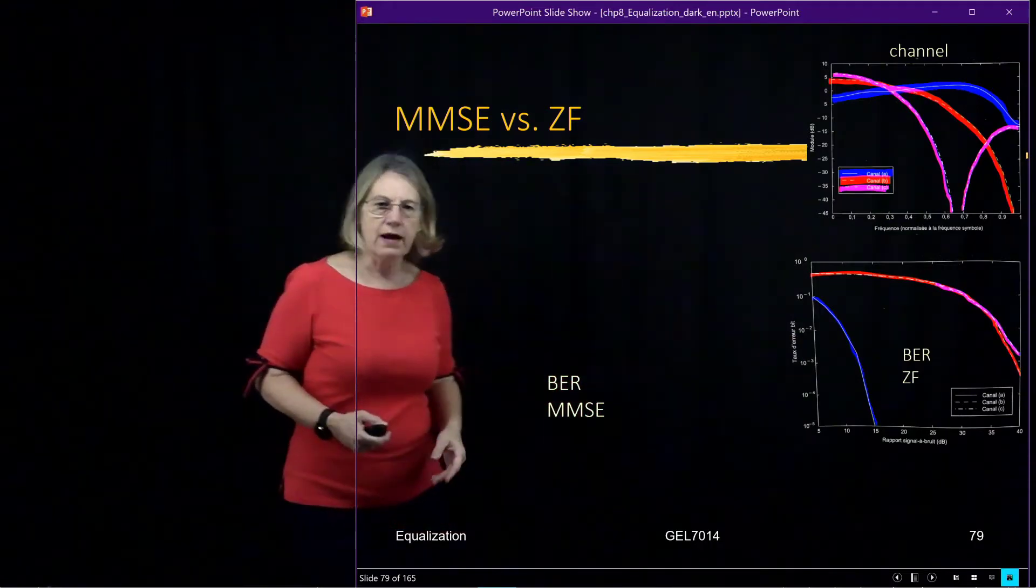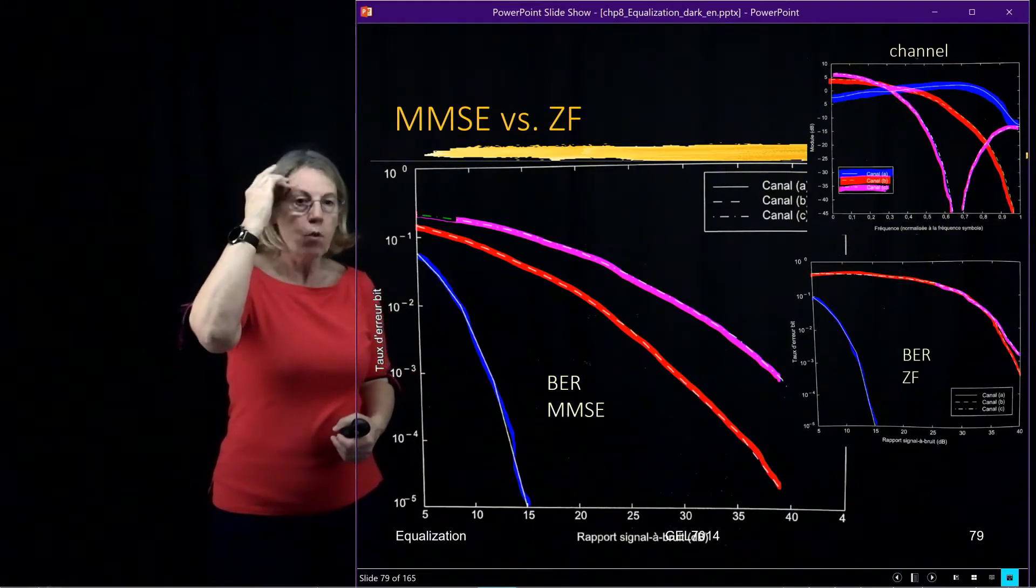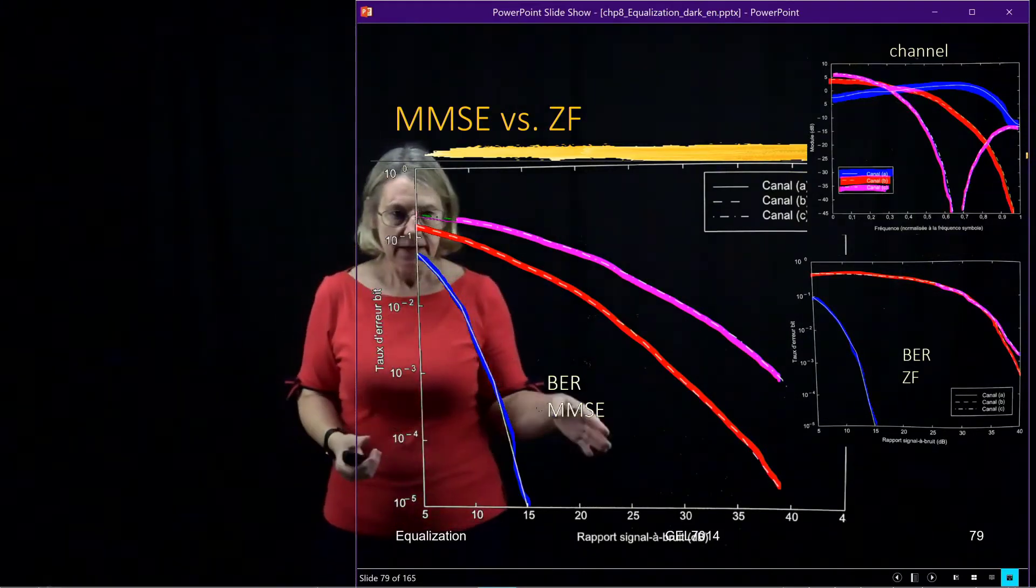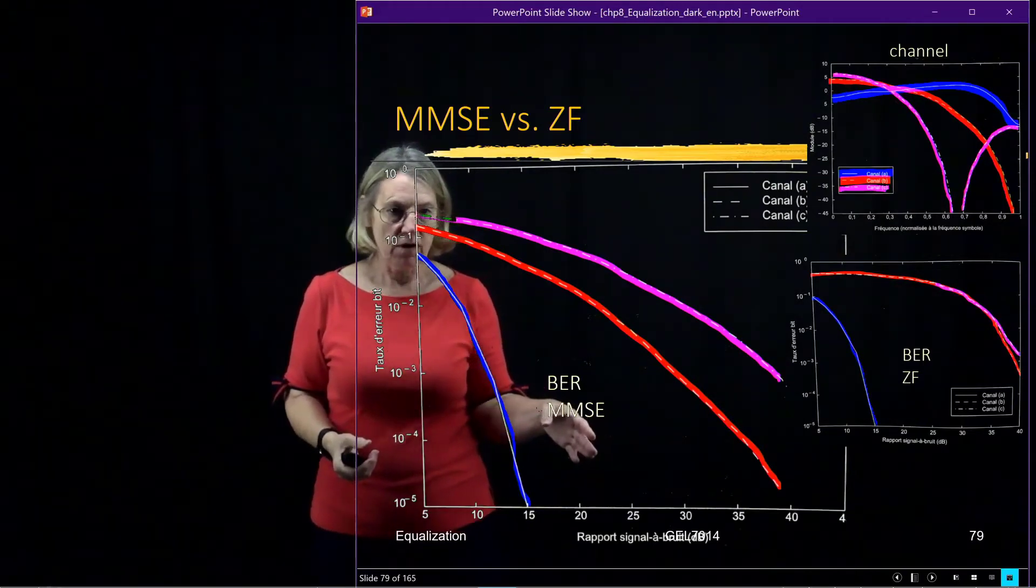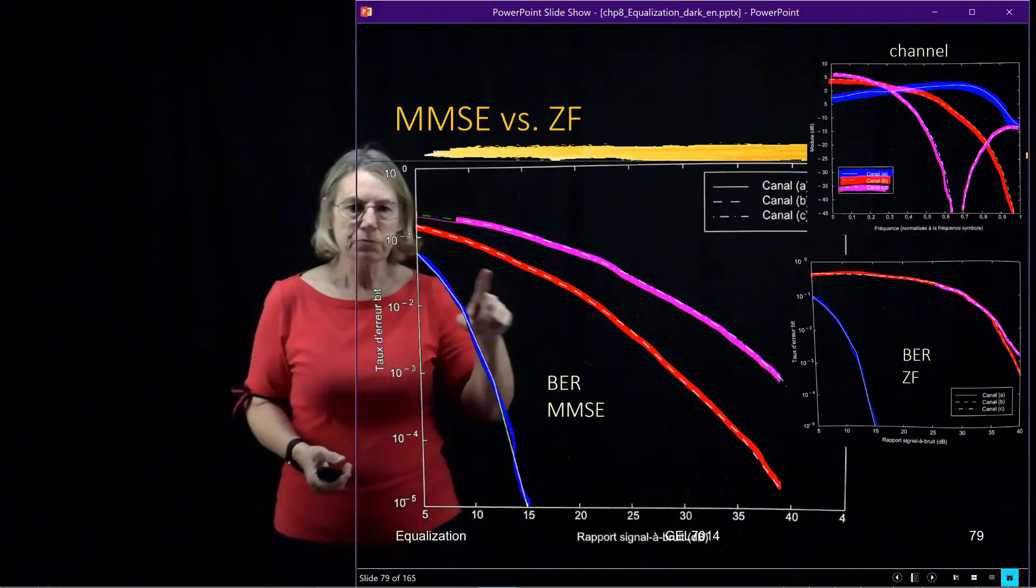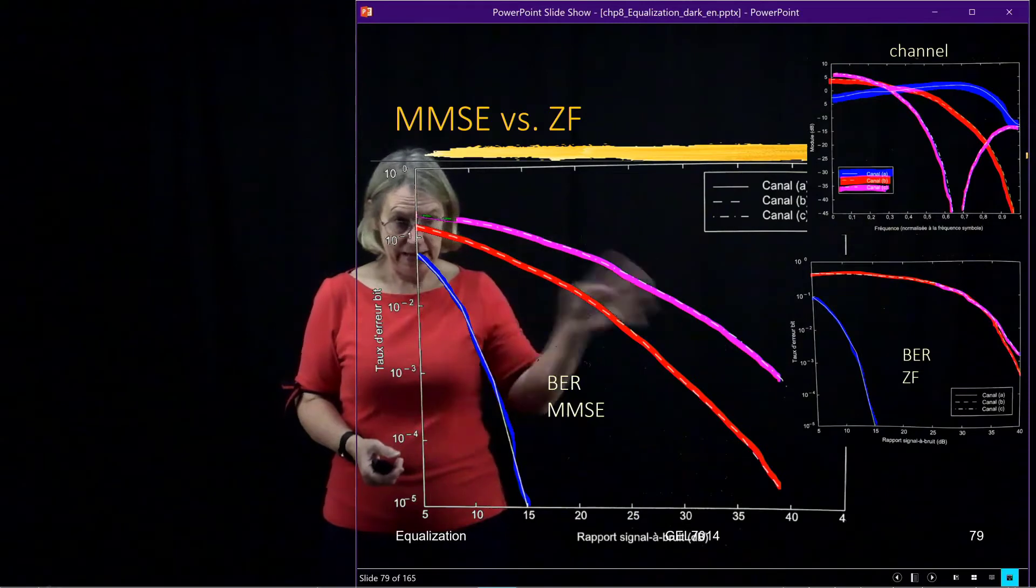So what happens when we come with the MMSE? Well, we can see we can do more correction in this case. In fact, before, especially with the red, we see that the red were getting much better performance than we did earlier with the pink.